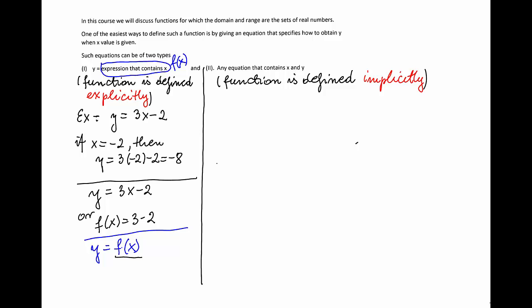Now let's discuss the second type of equation where we say that the function is defined implicitly. For example, I can write the equation 3x minus y equals 2.